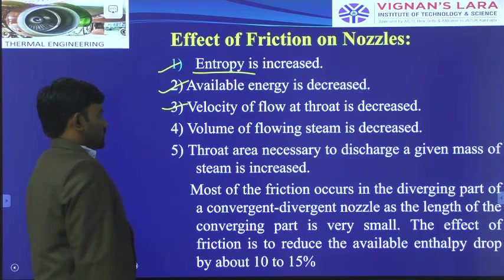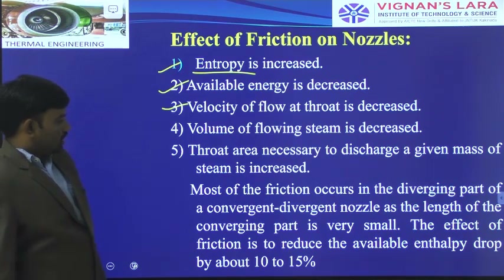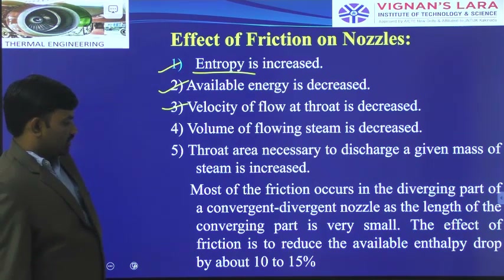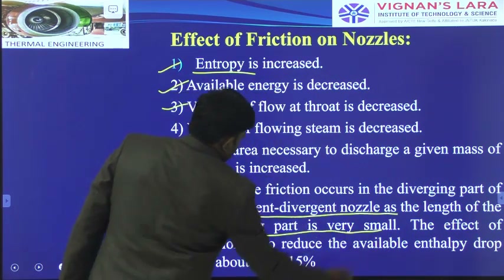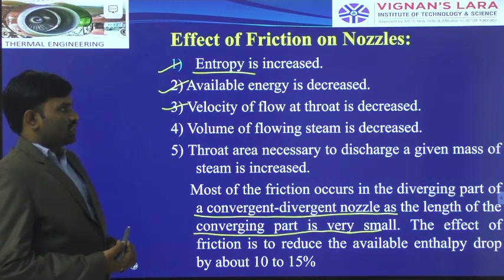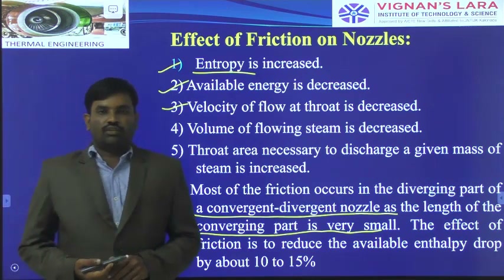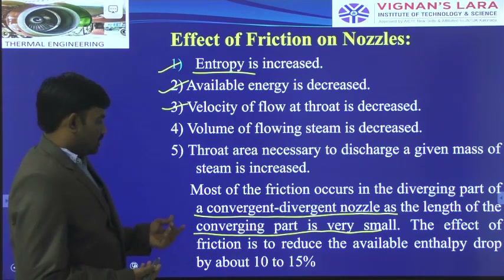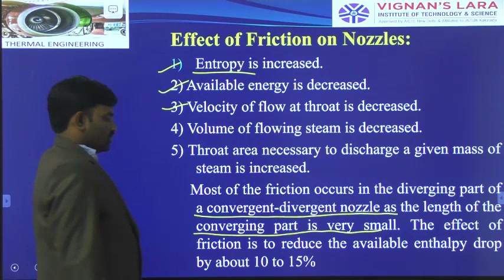The throat friction velocity is decreased, the volume of flowing steam is decreased, and the throat area necessary to discharge a given mass flow of steam is increased. Most of the friction occurs in the diverging part of the convergent-divergent nozzle, as the length of the converging part is very small compared to the diverging portion. The diverging portion is much longer, which is why we get higher friction there. The effect of friction is to reduce the available enthalpy drop by about 10 to 15%.